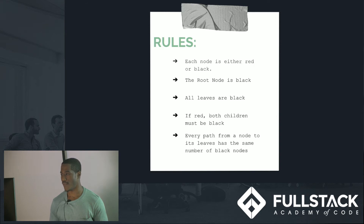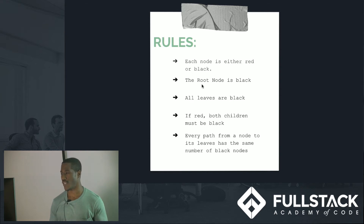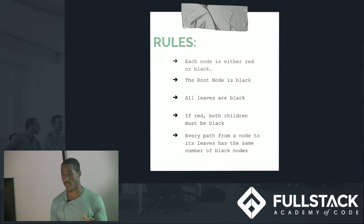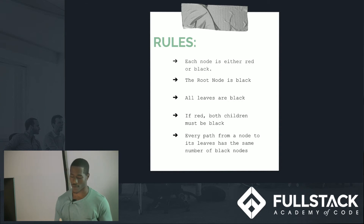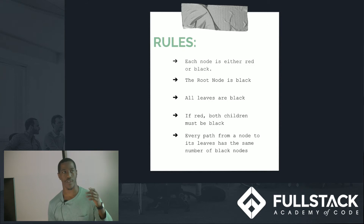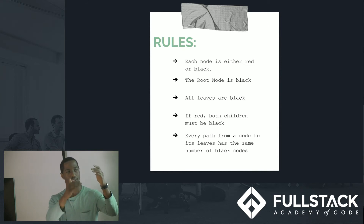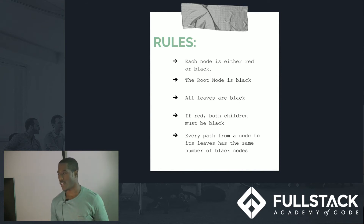What keeps the red-black tree balanced is a set of five rules. Each node is either red or black. The root node has to be black. All of the leaves are black. If a node is red, then both of its children need to be black. And any path from a given node to any one of its descendant nodes needs to have the same number of black nodes. So if we're going from node X to node Z, we need to have the same number of black nodes as if we're going from node A to node B in our tree.